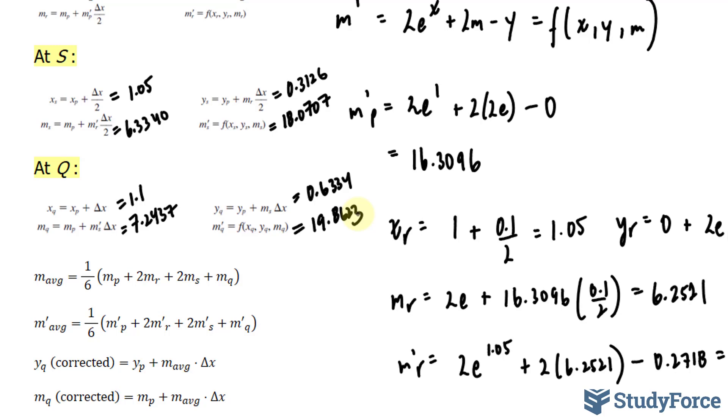Now that I've written down all of the calculations that you should have gotten, I'm going to show you what to do once you've found these final numbers. What we have here, y_Q, is the predicted version of our next y coordinate. To get the corrected version of y, which is shown in this formula, we take y_P, originally that was 0, and add m_average times Δx, which was 0.1.